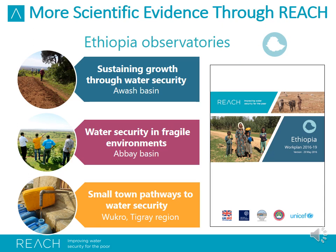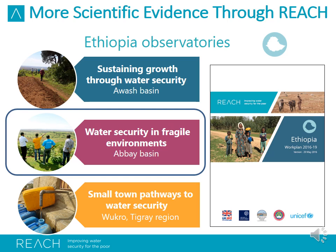We also generate scientific evidence through REACH, which has three observatories in Ethiopia. One is to show how water security enhances sustaining growth in Awash Basin, where industries, commercial farms, and large cities have serious competing demand for water. The lower part explores how small town pathways to water security are identified. The middle observatory focuses on how sustainable land management affects water security in general. I'm going to share a few results on the SLM pathway.